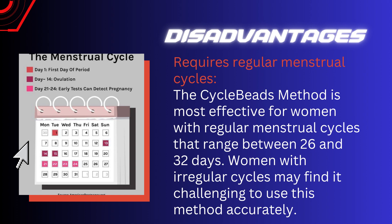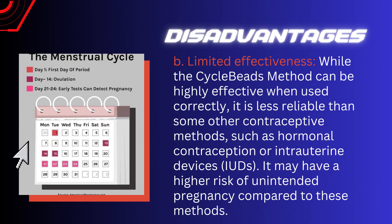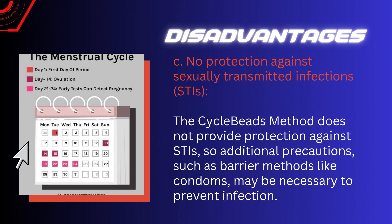Disadvantages of the cycle beads method include: it requires regular menstrual cycles — the method is most effective for women with regular cycles ranging between 26 and 32 days, and women with irregular cycles may find it challenging to use accurately. It also has limited effectiveness — while it can be highly effective when used correctly, it is less reliable than some other contraceptive methods such as hormonal contraception or intrauterine devices.